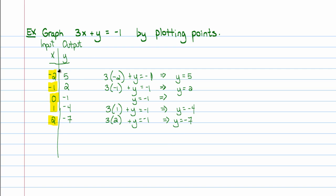Notice that for each step of 1 in the x direction — from x equals negative 2 to negative 1 to 0 to 1 to 2 — the y value decreases by a common number. It drops by 3 each time. That is a common property of linear equations: when you take single steps, you always drop by the same number. It won't always be 3 — it might be 2, or 1, or 2.8 — but linear equations have this wonderful property that every time you take a single step, you drop by the same amount.